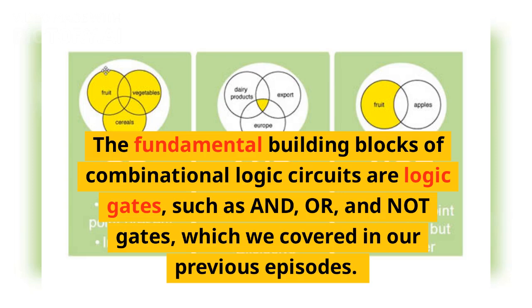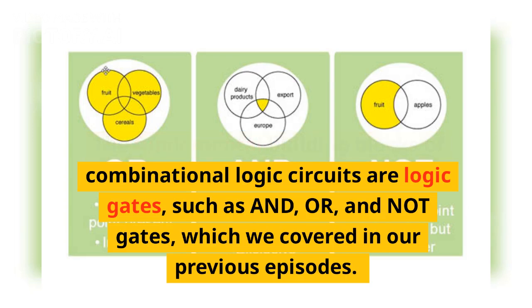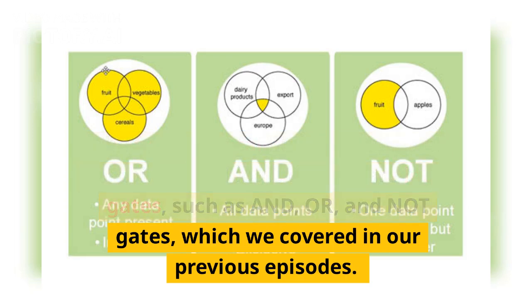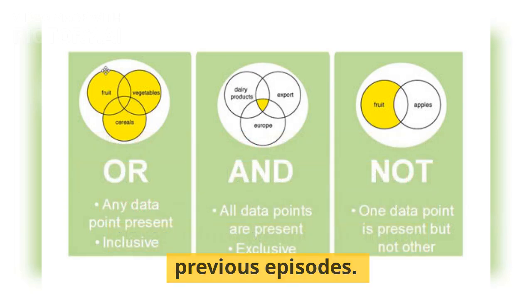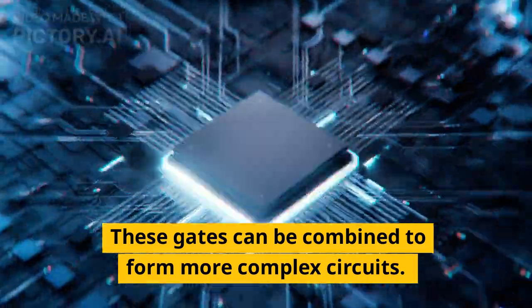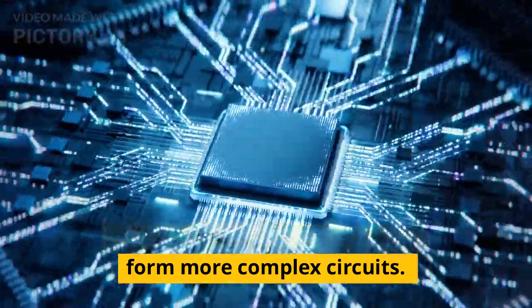The fundamental building blocks of combinational logic circuits are logic gates, such as AND, OR, and NOT gates, which we covered in our previous episodes. These gates can be combined to form more complex circuits.